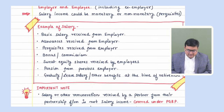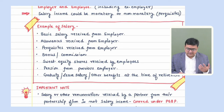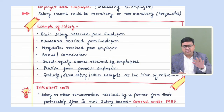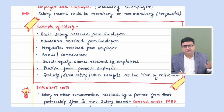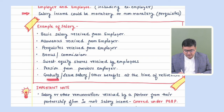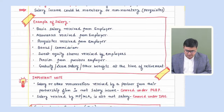Examples of salary include basic salary, allowances, perquisites, retirement benefits, even sweat equity shares received — we will compute the treatment of sweat equity shares. Pension from a previous employer is also taxable under this head. Gratuity, leave salary, or any other benefit received at the time of retirement — all of these are salary income.